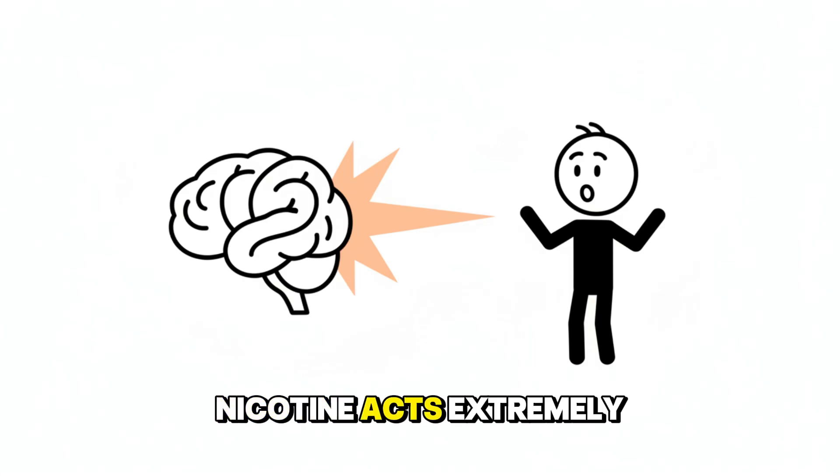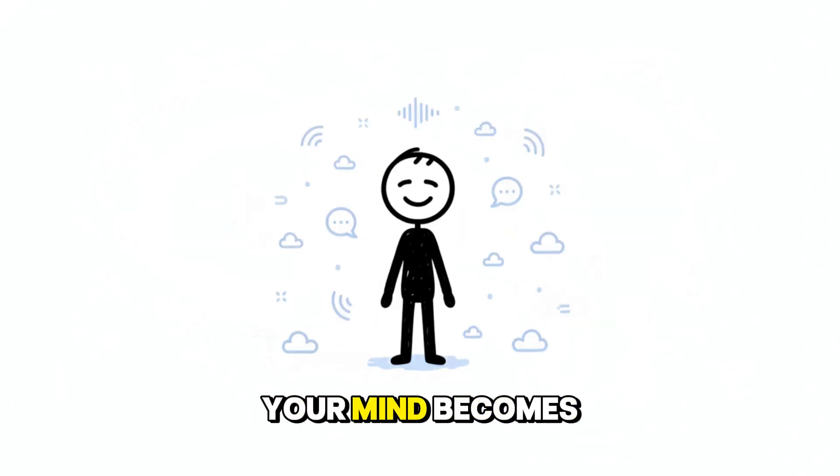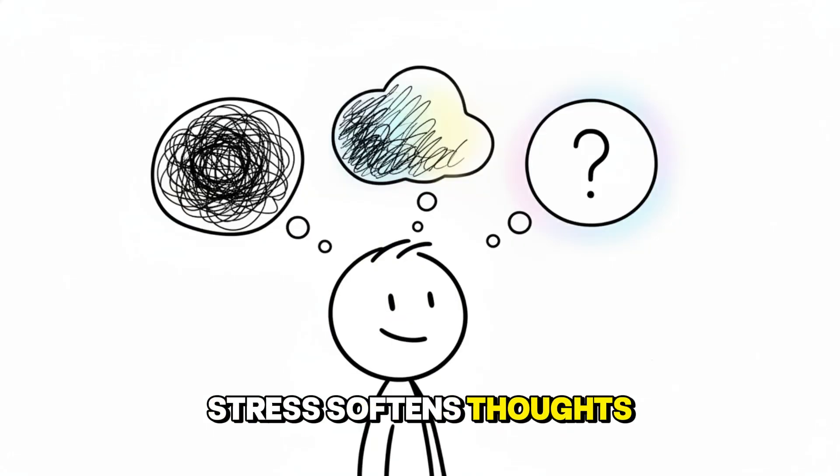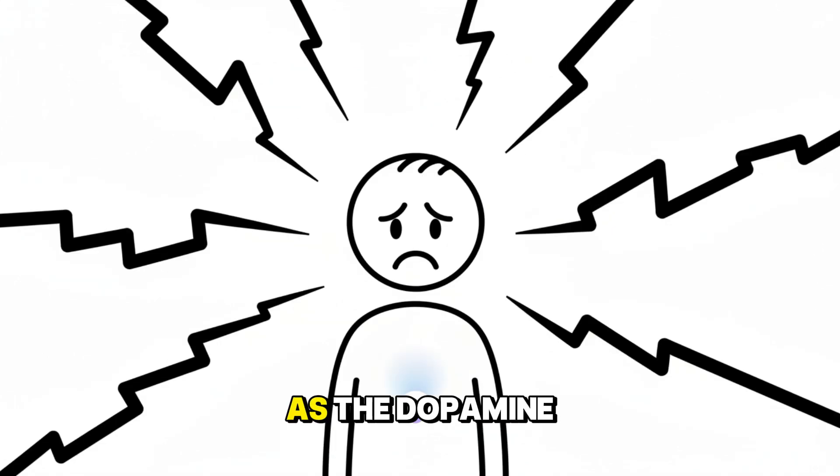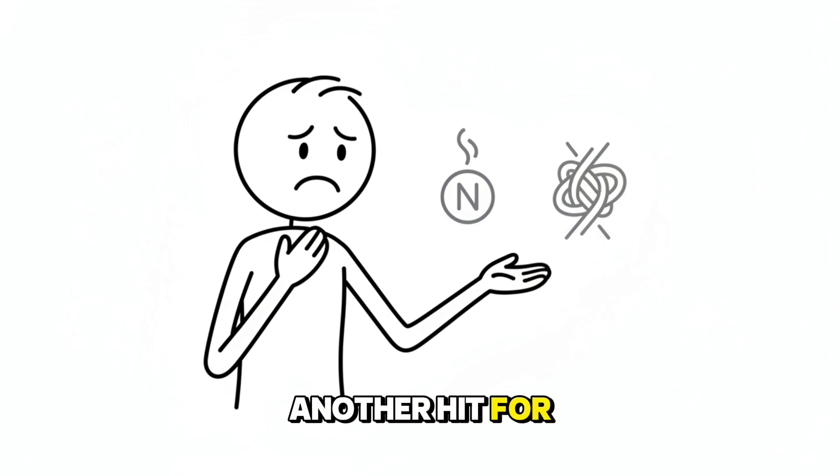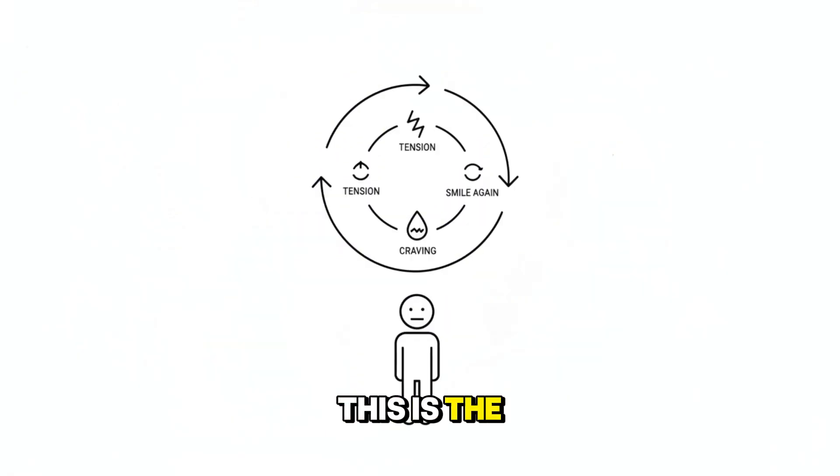Nicotine acts extremely fast because it creates a sharp dopamine spike. Within seconds, your mind becomes quieter and more focused. Stress softens, thoughts become clearer. Your brain interprets this as relief. But nicotine burns out quickly. As the dopamine fades, tension rises again. You don't want another hit for pleasure. You want it to stop the growing discomfort. This is the core loop of nicotine. Relief, tension, craving, relief.